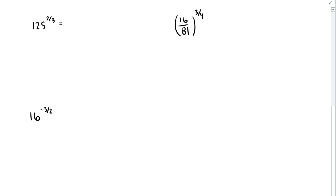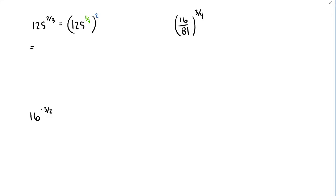So, 125 to the 2/3 power — this is the same as 125 to the 1/3, and then afterwards applying that square of 2. What's 125 to the 1/3? The right candidate is 5: 5 times 5 is 25, and 25 times 5 is 125. So in the parentheses we have 5, but then we still have to apply that square, and we end up with 25. So 125 to the 2/3 is 25 — we apply the cube root and then square.